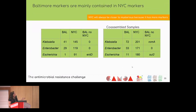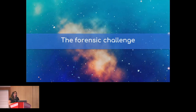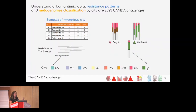Looking at the AMR marker counts across samples, Baltimore doesn't have as many markers as New York City. The same pattern holds in the co-assembled samples — more marker genes are recovered from New York than from Baltimore. We conclude that we need more sequencing depth in Baltimore to find a different result.